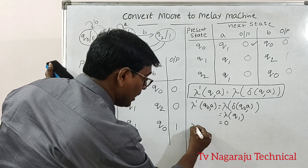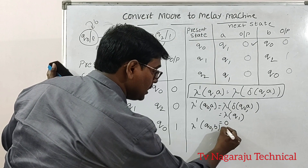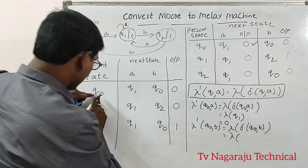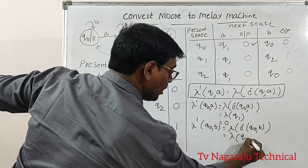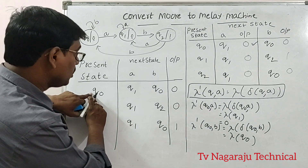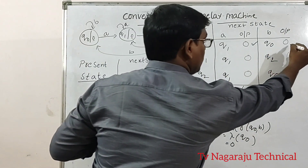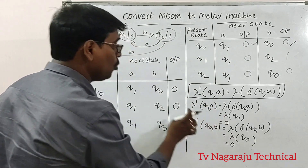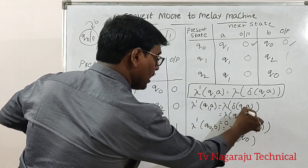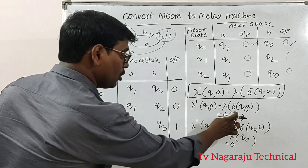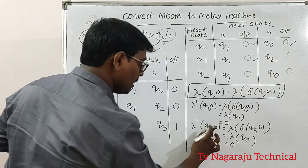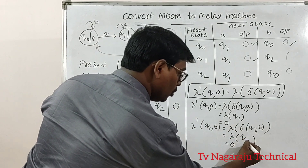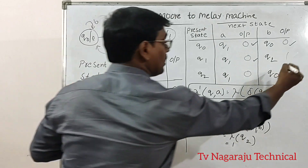Next, Q1 on A: Q1 on A moves to Q1, λ(Q1) = 0. Output is 0. Q1 on B: Q1 on B moves to Q2, λ(Q2) = 1. Output is 1. Q2 on A: Q2 on A moves to Q1, λ(Q1) = 0. Output is 0.